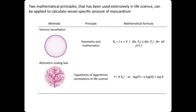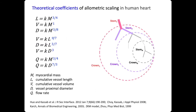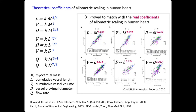Two mathematical principles extensively used in life science can be applied to calculate vessel-specific amount of myocardium. The first is branching geometry based on Murray's law, and the second is the allometric scaling law based on logarithmic correlations in life science. The theoretical coefficients of the allometric scaling law have been studied extensively, and we have shown that these theoretical coefficients match very well with the real coefficients of allometric scaling in the human heart.